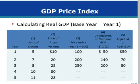In this table, nominal GDP and real GDP are calculated based upon the formula. Years 1 to 3 have been calculated. Complete the table for years 4 and 5.